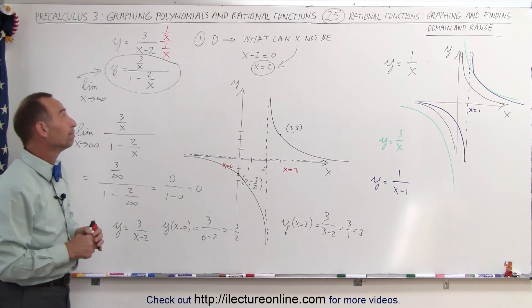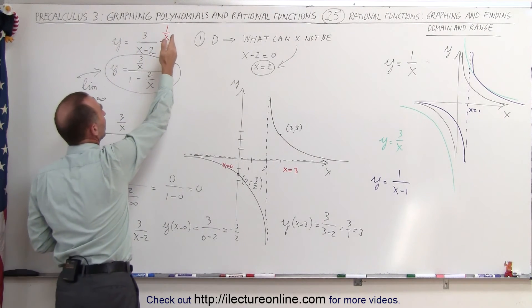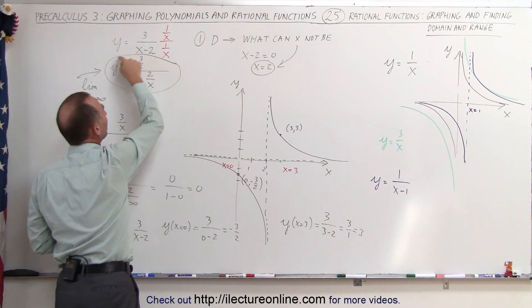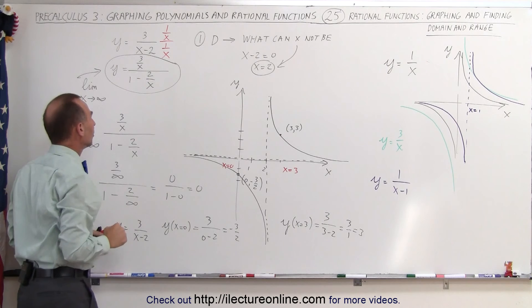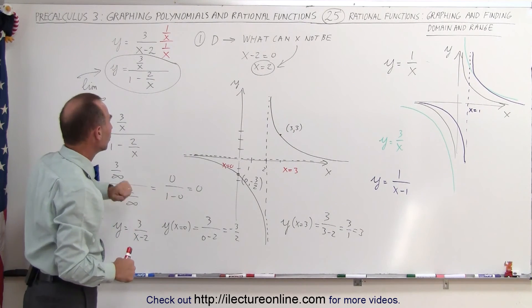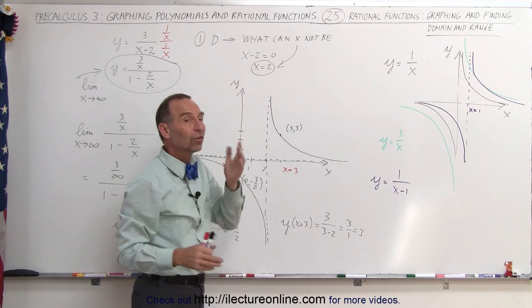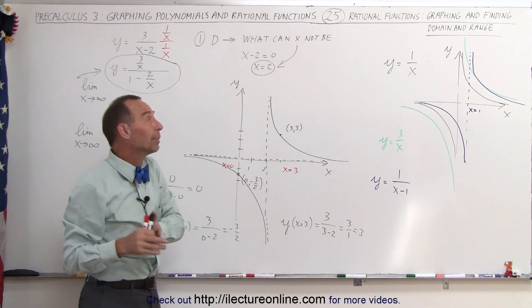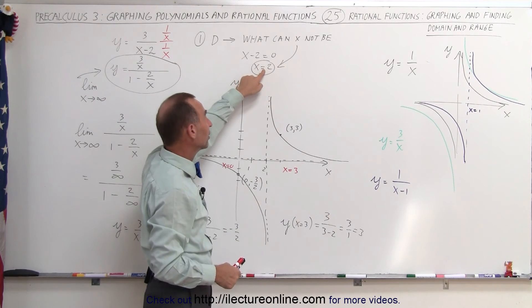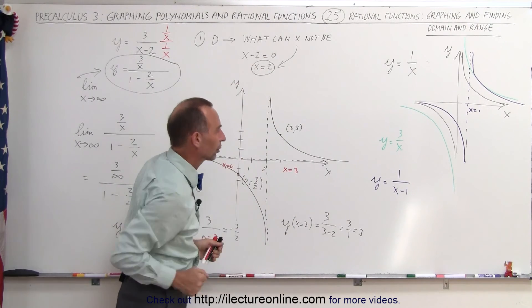To summarize the technique: take your function, look at the largest exponent of x, and multiply both numerator and denominator by 1 over x to that exponent. That puts the function into a different format. When you take the limit, you find the horizontal asymptote at y equals 0. Then look at the denominator — decide what it cannot equal. It cannot be 0, so x cannot equal 2, because when x equals 2 the denominator becomes 0. That's how you find the vertical asymptote, and this technique works no matter what your function looks like.